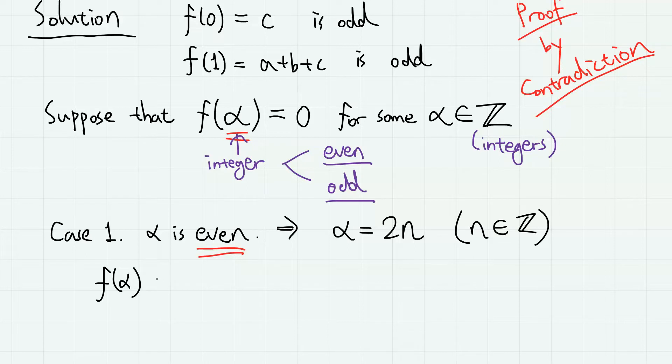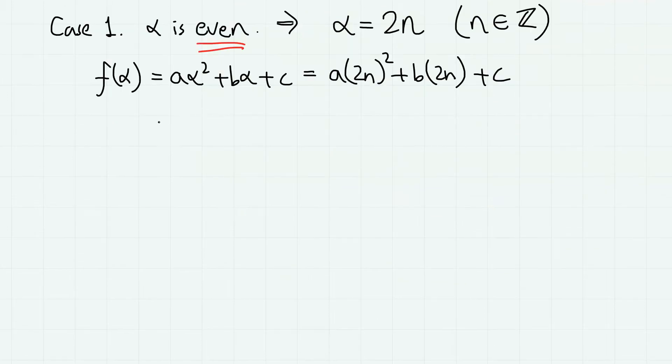Then, f(alpha) can be expressed as a(alpha)² plus b(alpha) plus c, which is a(2n)² plus b(2n) plus c, which is 4an² plus 2bn plus c, and if we take out 2, we have 2(2an² plus bn) plus c.